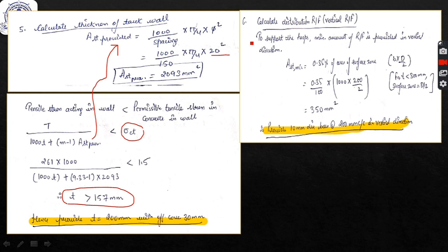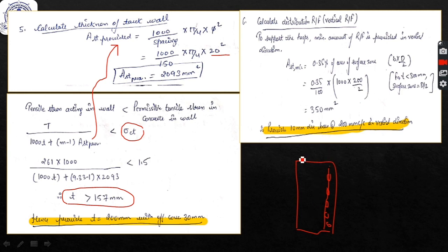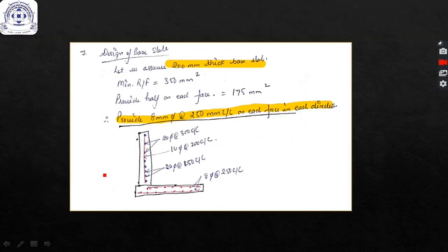The vertical reinforcement is provided to support the hoops. The surface zone is taken as half the area of thickness since 200 mm is quite thin — reinforcement is needed on one face only. We provide 10 mm diameter bars at 200 mm center-to-center in the vertical direction as distribution steel.